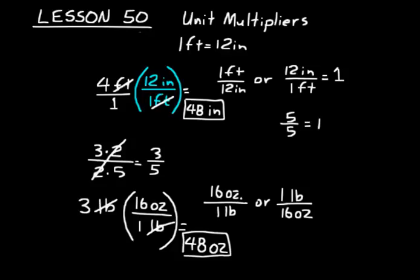You have to think of the numerical part separate from the units, but treat both the same way. So 3 times 16 is 48, and your pounds divided by pounds cancels out — you're left with 48 ounces. You can always write the starting number over 1 to think of it as a fraction if that helps you understand unit multipliers better.